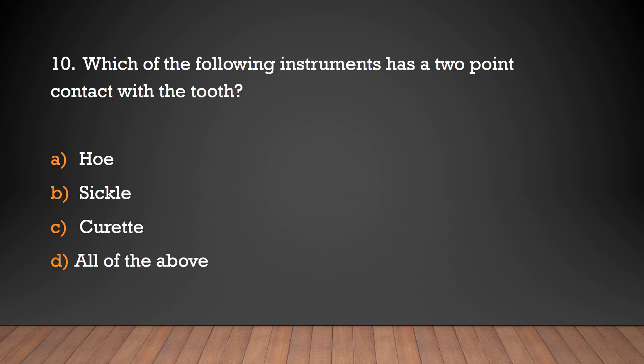Which of the following instruments has a two-point contact with the tooth: hoe, sickle, curette, or all of the above? The answer is hoe — the hoe has a two-point contact with the tooth.